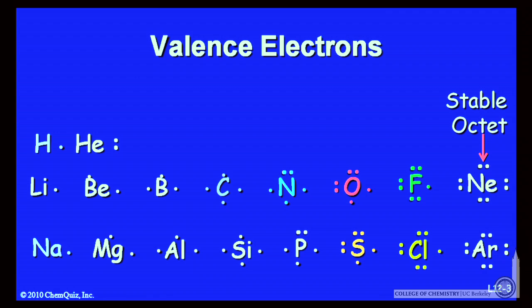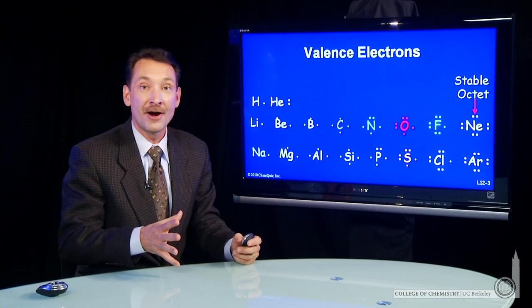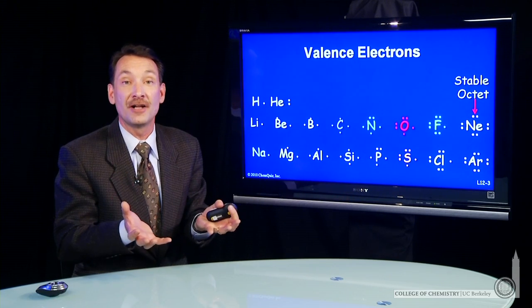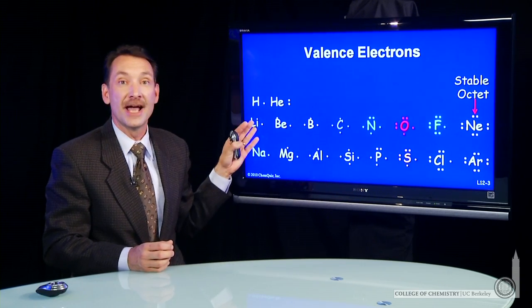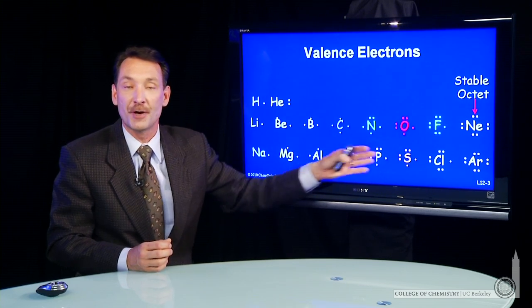These elements at the end are not particularly reactive. Neon and argon have a closed shell stable octet of electrons. They're not as reactive as their counterparts in the corresponding rows.